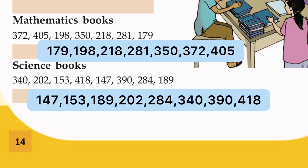340, 390, and last, 418. The first number is the smallest number, and the last number is the largest number.